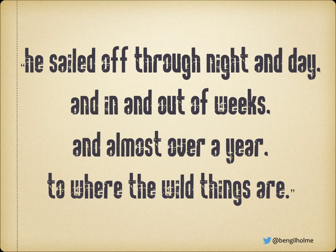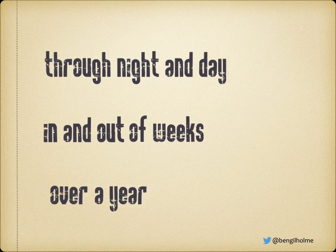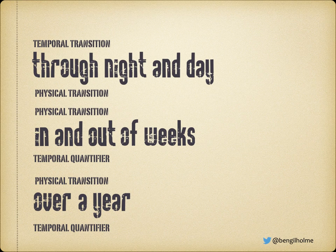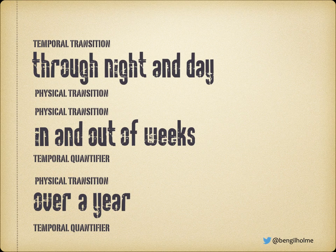From Maurice Sendak's Where the Wild Things Are: 'he sailed off through night and day and in and out of weeks and almost over a year to Where the Wild Things Are.' I'm focusing here on the way Sendak has used the prepositions. Pulling them out: you've got 'through night and day,' 'in and out of weeks,' and 'over a year.' Each of these prepositions can be used in multiple ways — 'through' can be used as a temporal transition or a physical transition, 'in and out' can be used physically or as a temporal quantifier, and likewise 'over' can be used as either a physical transition or a temporal quantifier.